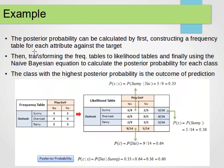Let's take an example. The posterior probability can be calculated first by constructing a frequency table for each attribute against the target. If our data is numerical, we can transform it into categorical — or I'll show another technique in the next video for handling numerical variables. After building the frequency tables, we transform them into likelihood tables or probability tables, and finally use the Naive Bayes equation to calculate the posterior probability for each class. The class with the highest posterior probability is the outcome of prediction.